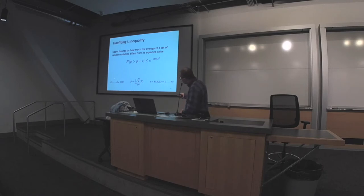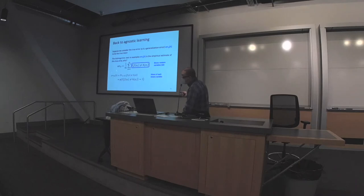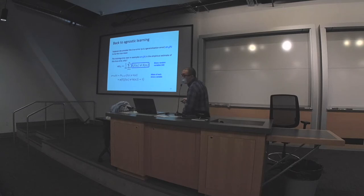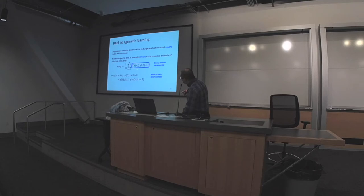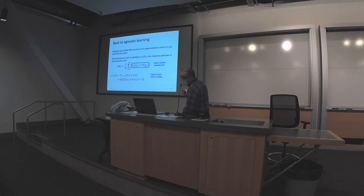According to Hoeffding's inequality, the true mean is the true error — actually, the true error is the ratio of misclassified examples by our hypothesis. If you write it down, it's essentially an average of a set of binary random variables. For each training example, you look at the prediction of the ground truth function and the prediction made by a hypothesis. If they're not equal, the indicator is one, otherwise zero. Going through every training example gives you N binary random variables, and averaging them gives the training error.